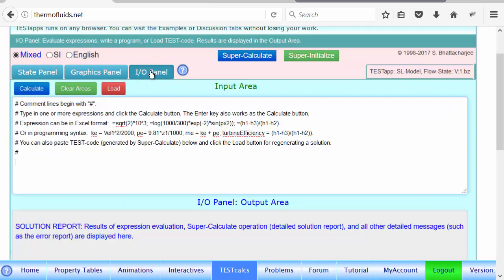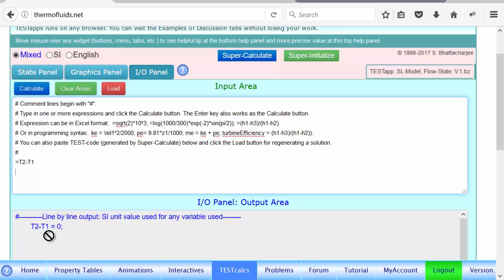We can always find the answers here. You can say T2 minus T1 will produce the temperature difference. So we could use a variable like this, delta T. And if you click the calculate button, then you declare a variable. So this is a very powerful feature of the I/O panel. You can declare any variable and use those variables in the state panel.